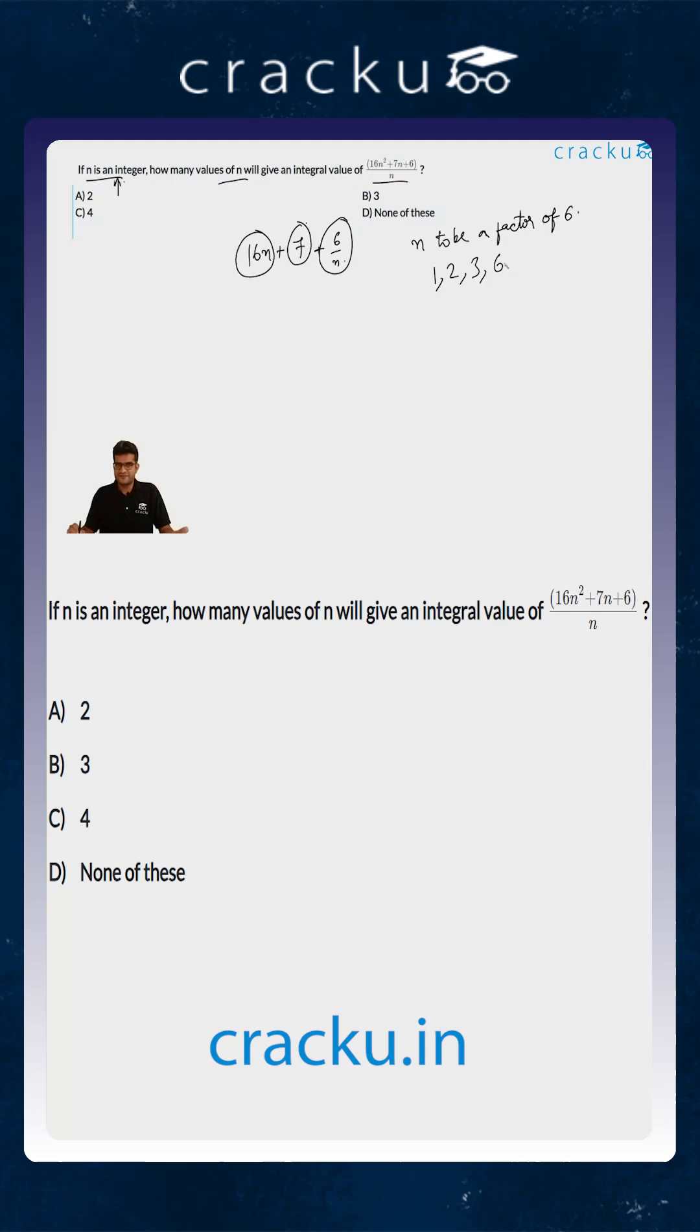So you would think the answer will be 4, but over here we are told that n is an integer. We were not told that n is a natural number. So even the negative values, that is minus 1, minus 2, minus 3, and minus 6, also are solutions.